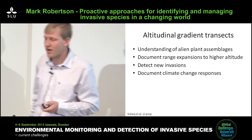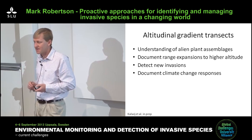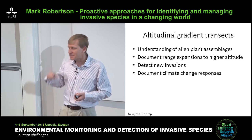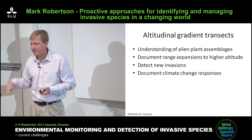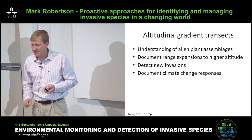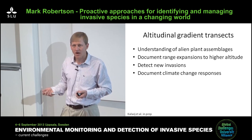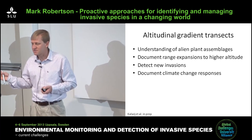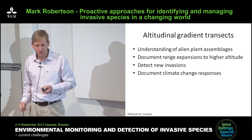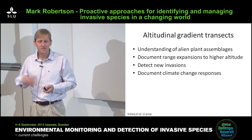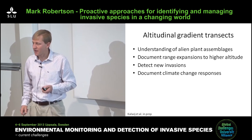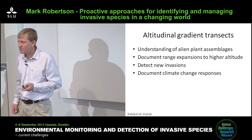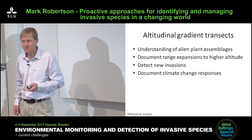Altitudinal transects are useful for understanding alien plant assemblages — alien plants are not in isolation, there's a whole assemblage, and if you remove one there are others to take its place. Documenting range expansions to higher altitude gives an indication of how far a species is likely to spread geographically. It's also useful for detecting new invasions and for documenting climate change responses, since rapid range expansion could be related to climate change.